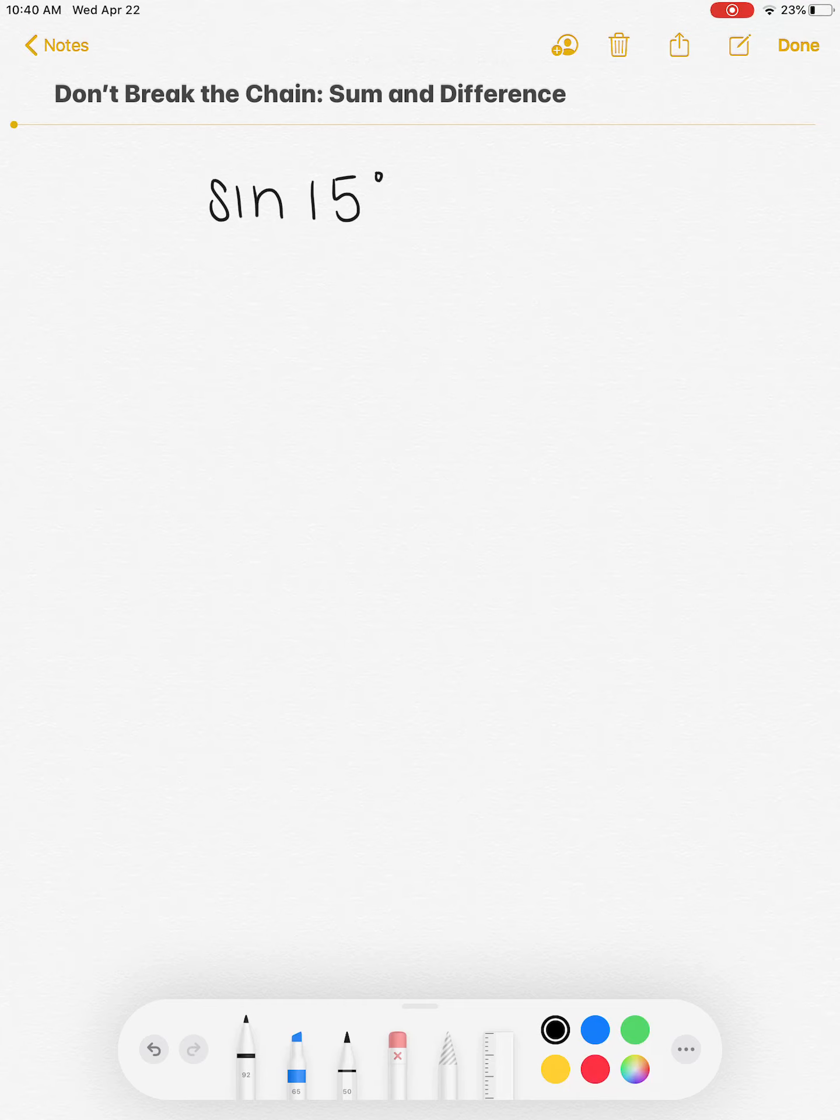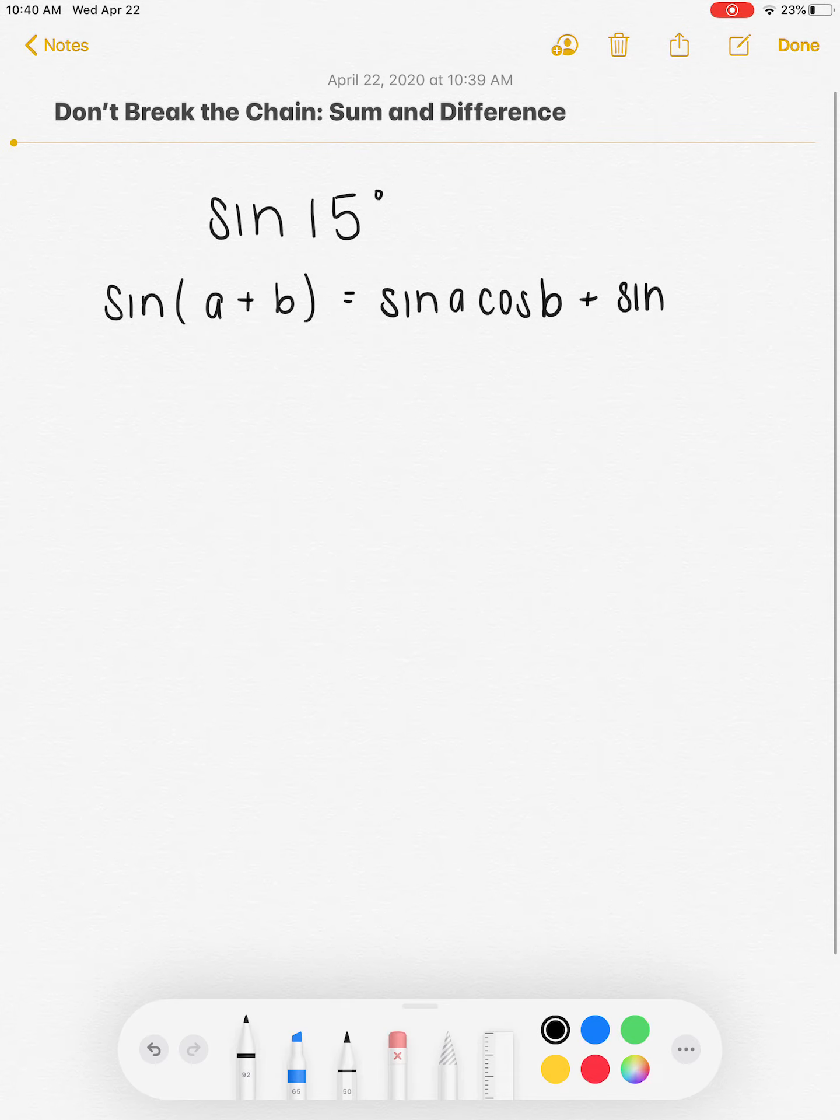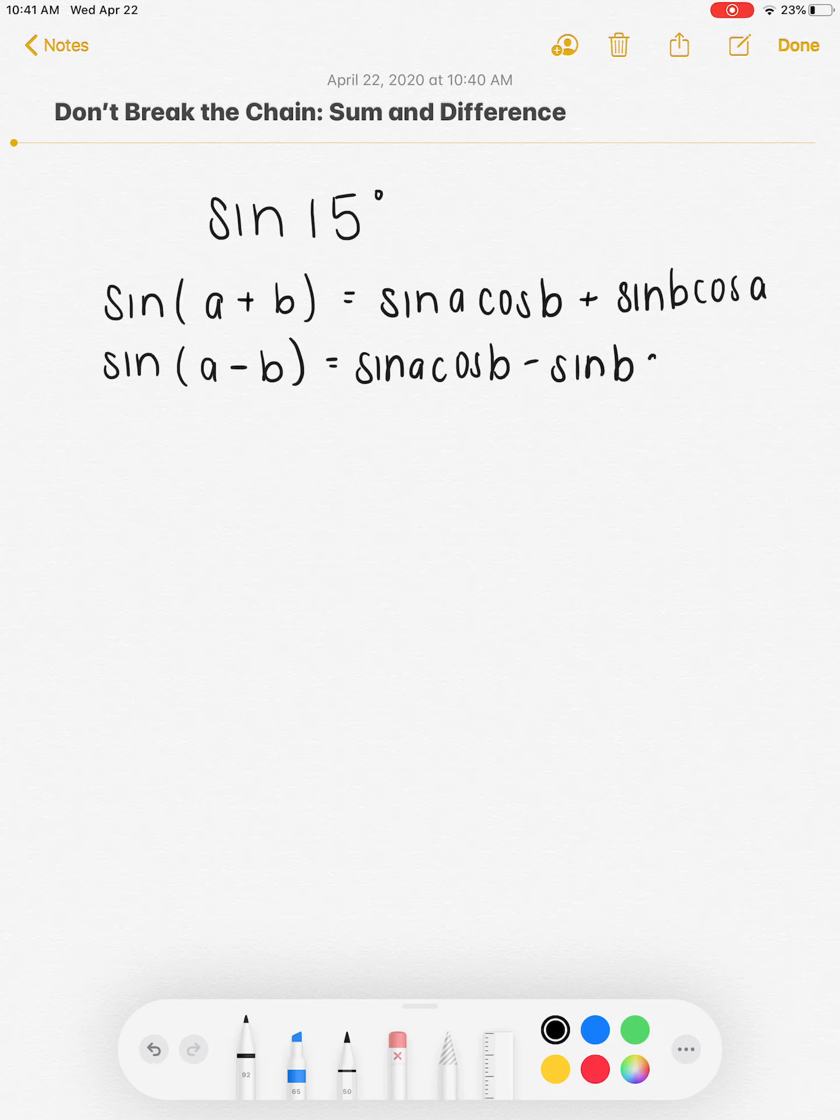Since I'm looking to solve sine of 15 degrees, I know I have two options for identities that I can use. I can use sine of A plus B, which equals sine A cosine B plus sine B cosine A. Or I can use sine of A minus B, which is the same formula, it just has a subtraction sign in between instead of an addition sign.